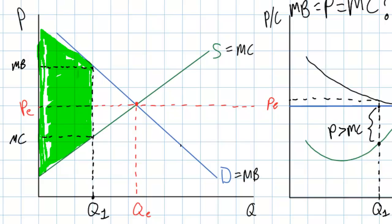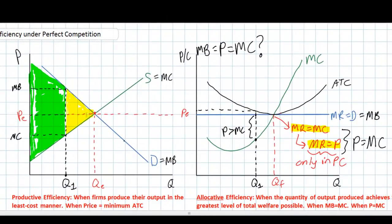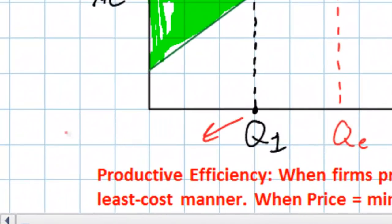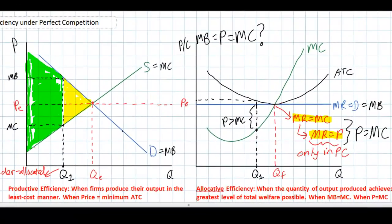Total welfare at Q1 is equal to the green area in our graph. However, if individual firms were producing at their profit maximizing level where price equals marginal cost, there would be a gain in total welfare equal to the yellow triangle. Only at QE is total welfare maximized. If firms produce at any level other than where price equals marginal cost, total welfare is reduced and that outcome is allocatively inefficient — resources are under-allocated towards this good.